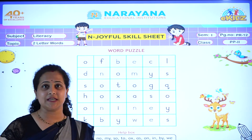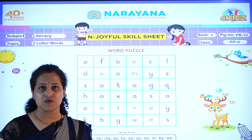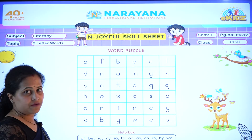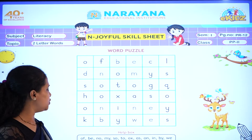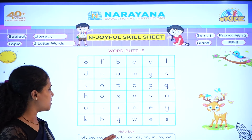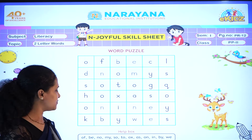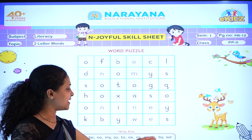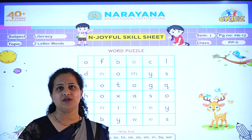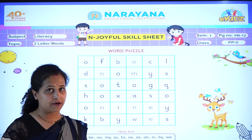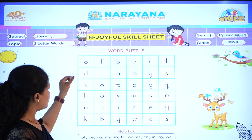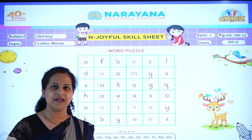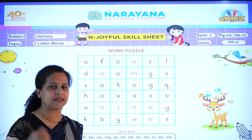See, here you can see a word puzzle. What you have to do? Here you can see two letter words. Let's read them out. What we have to do in here? We are going to find out these words and we will circle them. Okay, dear children? Let's do it. All of you take out your pencil and start doing it.